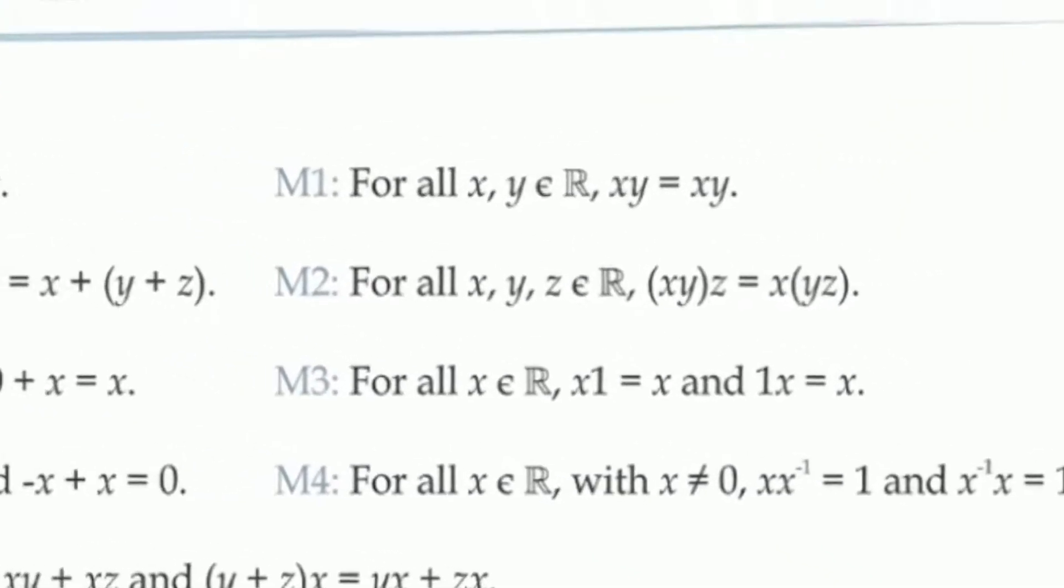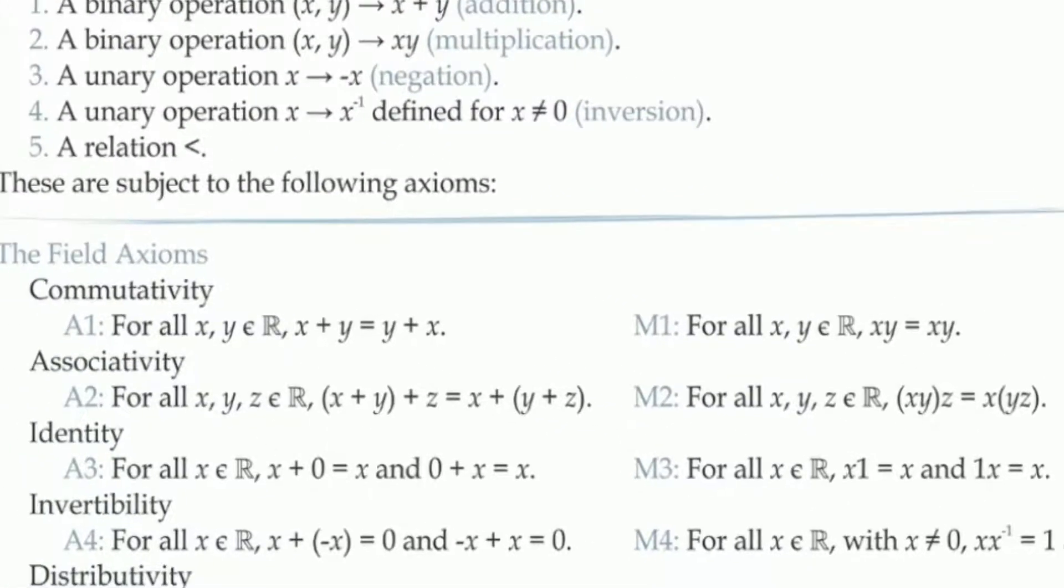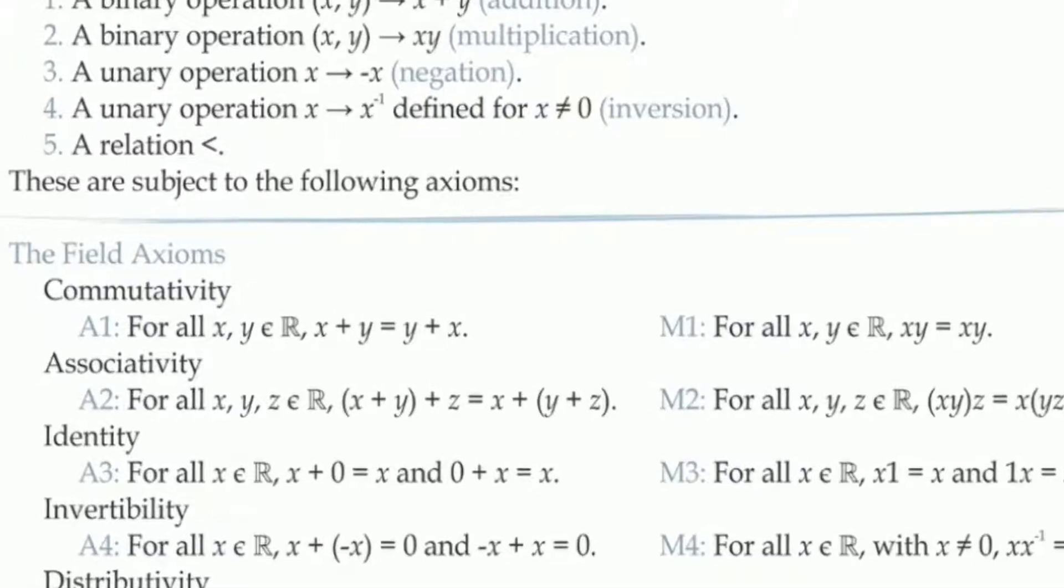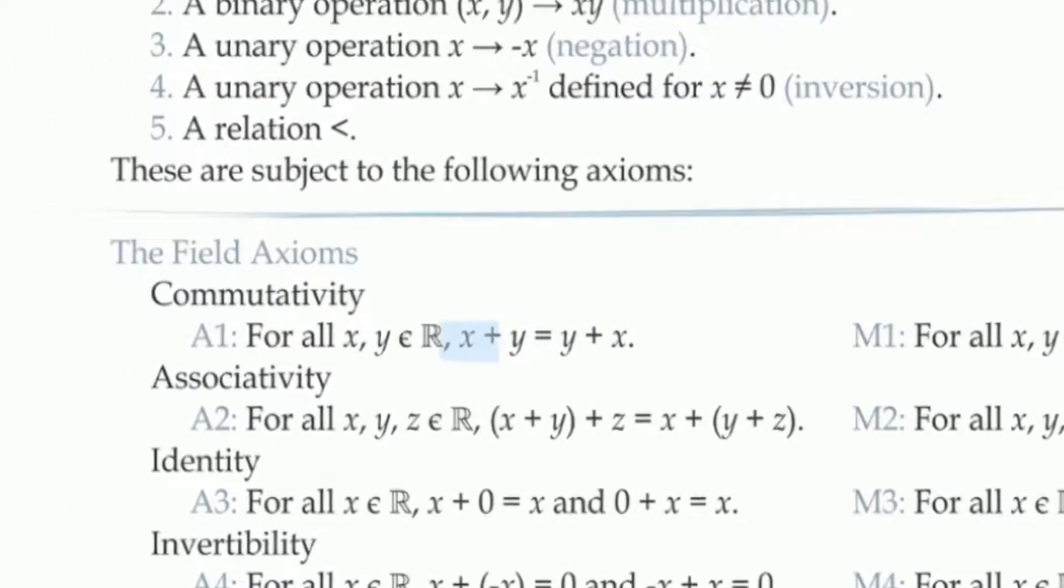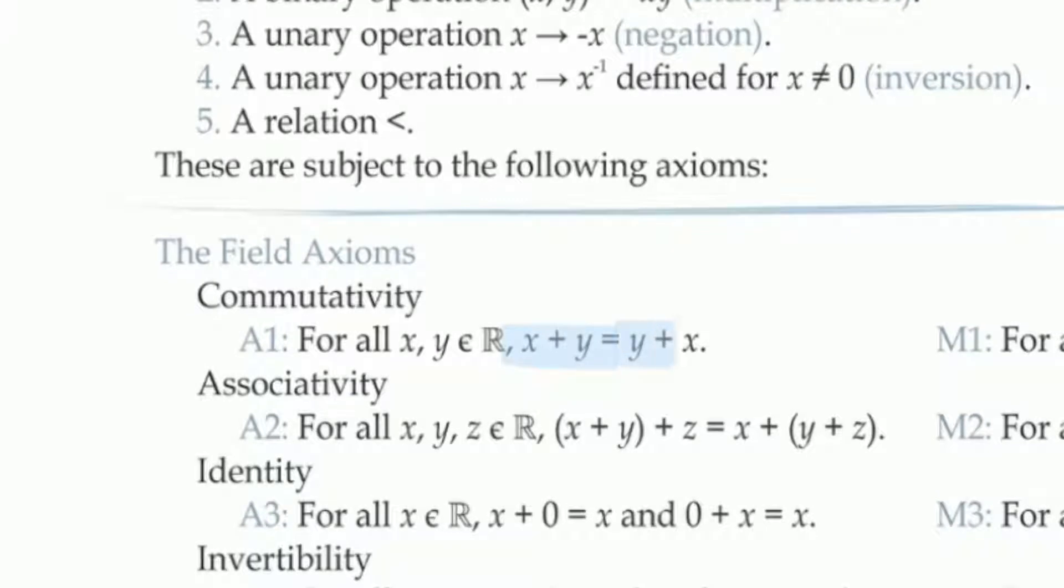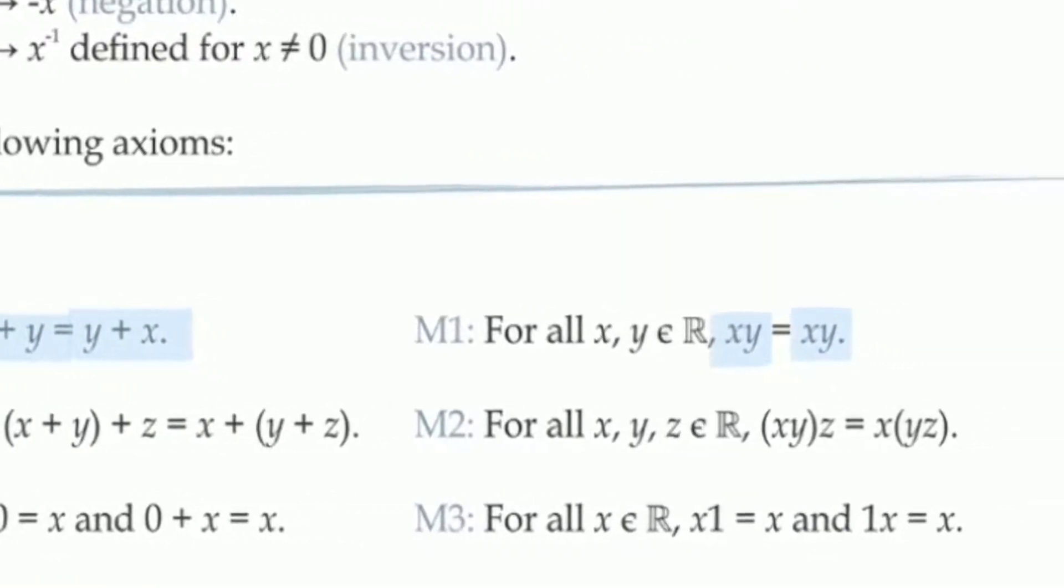Looking at axioms A1 and M1, we see that both addition and multiplication are what we call commutative. This means the order doesn't make any difference. If we add x plus y, this is the same as adding y plus x, and similarly for multiplication.